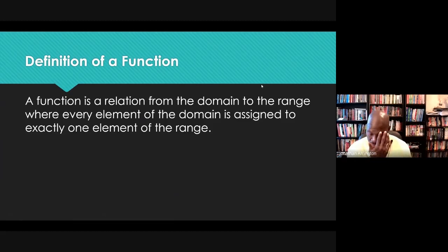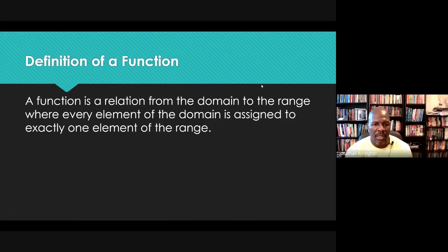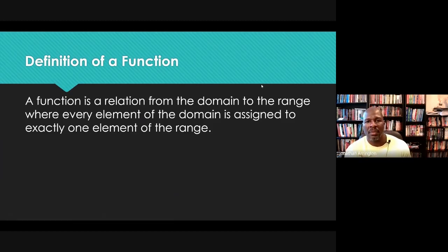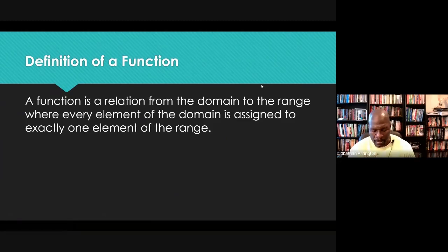That's one of the reasons why this characteristic of a function is so vitally important. Because the main thing about a function compared to a general relation is that each element of the domain is paired with only one element of the range, and that can be easily tested with a graphical representation using something called a vertical line test.